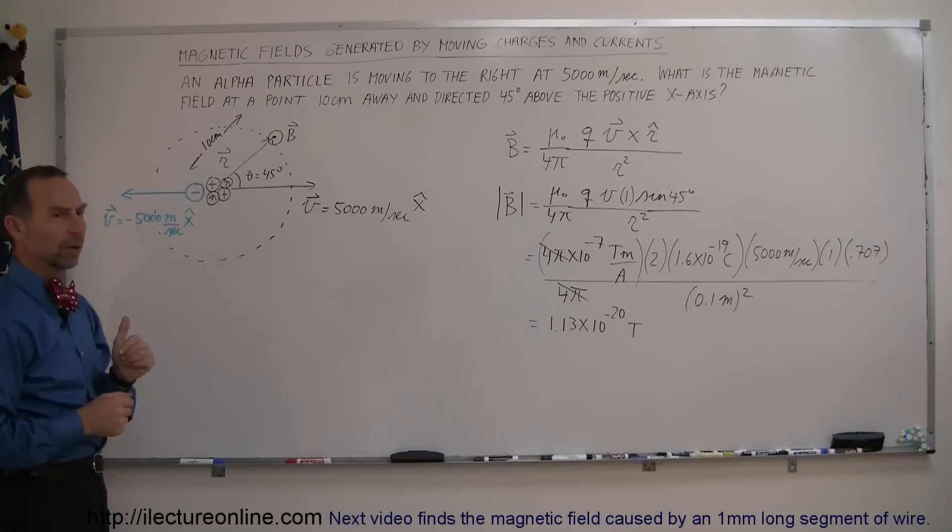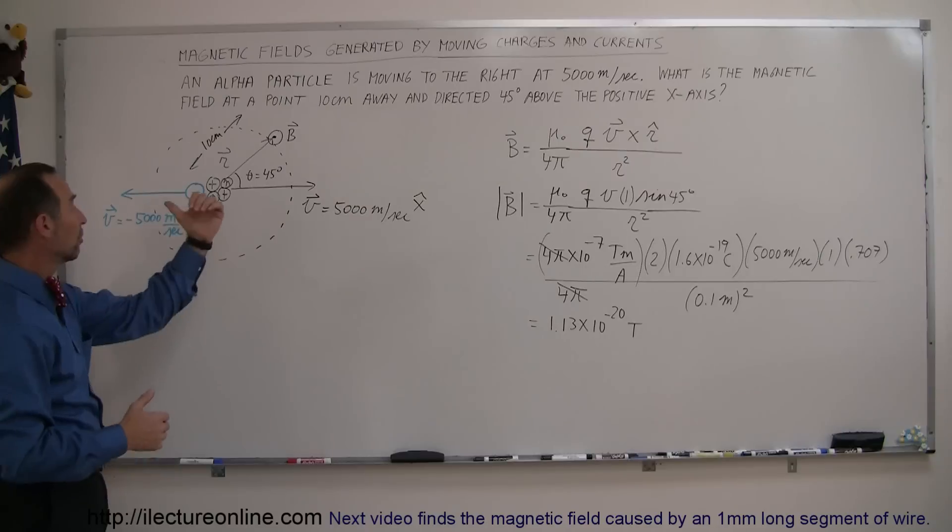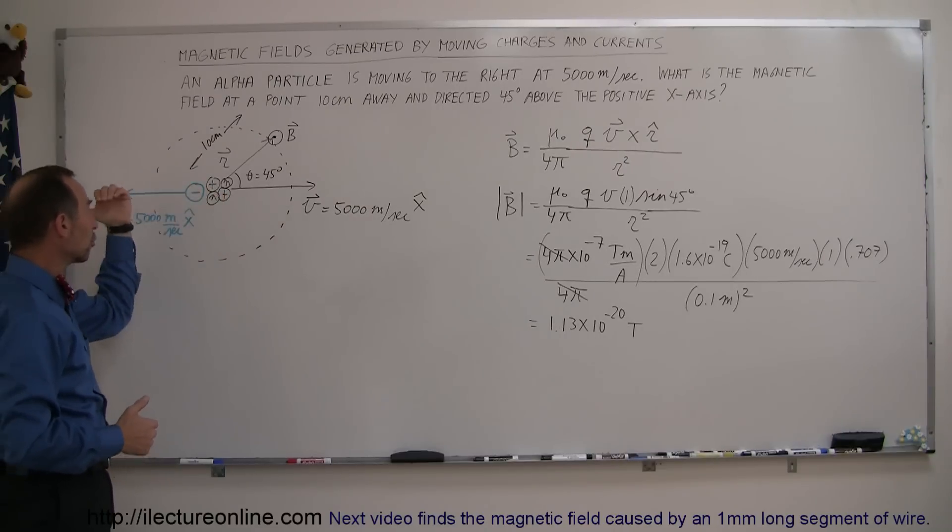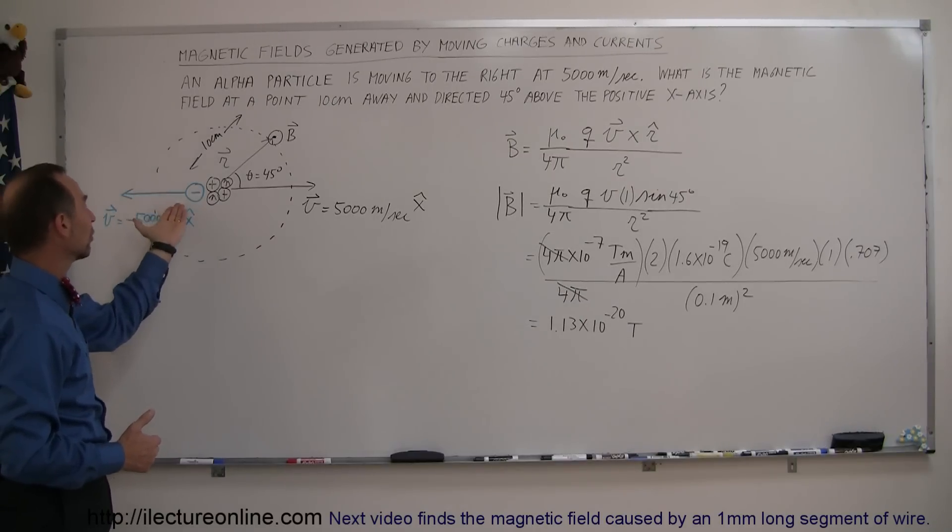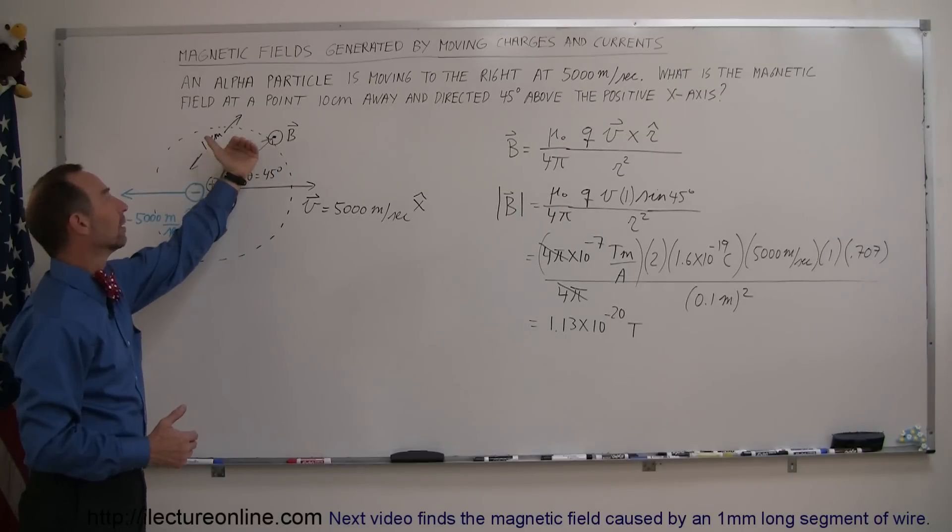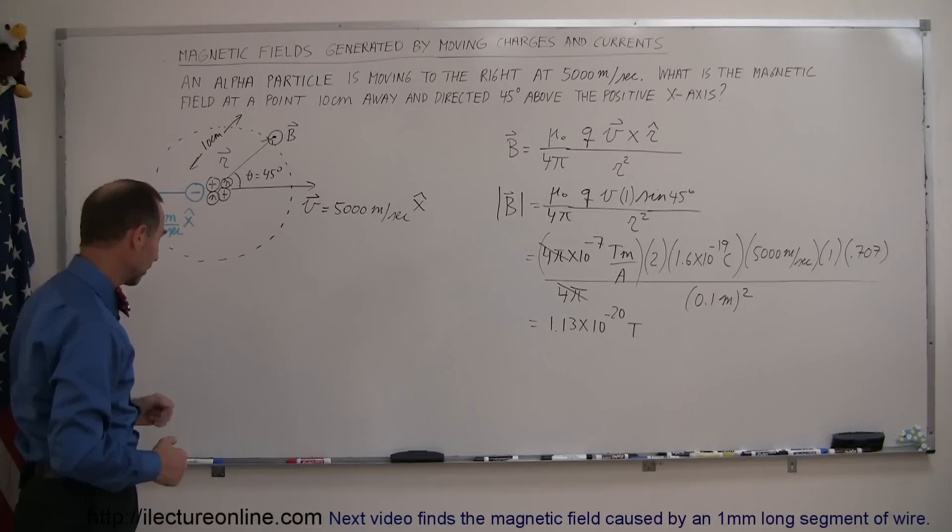Since it's a negatively charged particle to find the direction we use our left hand instead of the right hand, you point the thumb in the direction of the motion of the particle, which is this way, and then your fingers will curl in the direction of the magnetic field. And notice that over here the field will also be out of the board, same direction as the direction caused by the alpha particle.